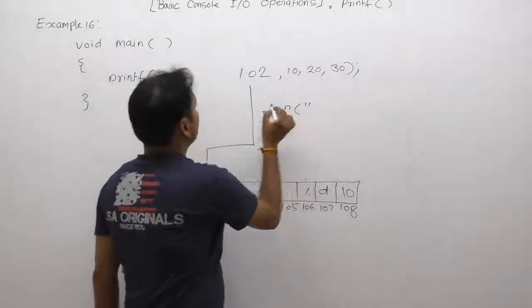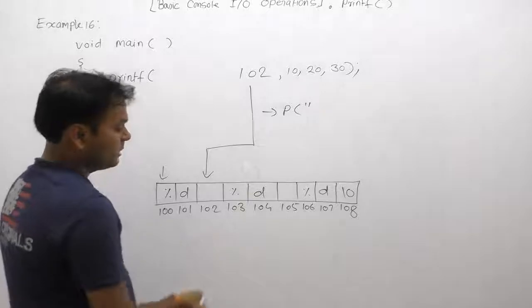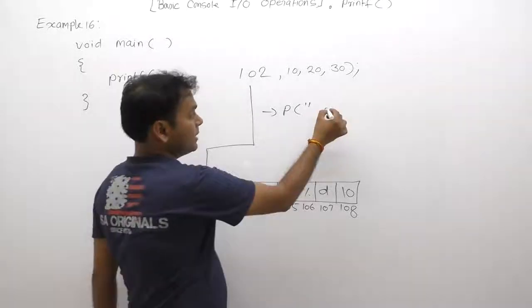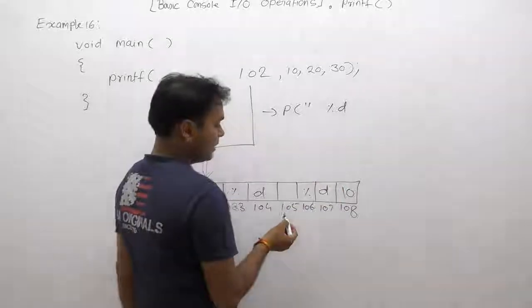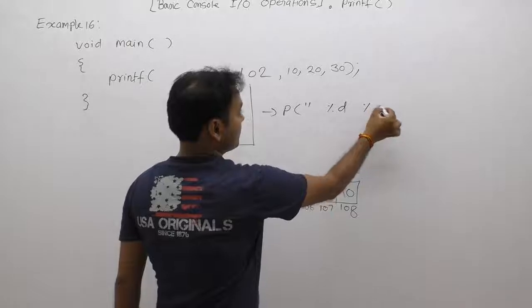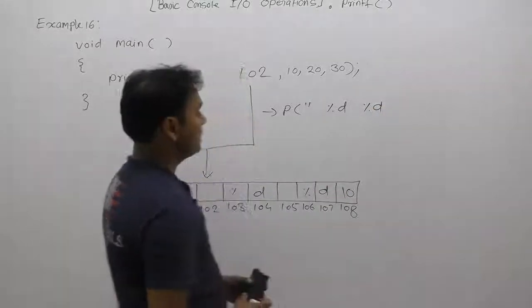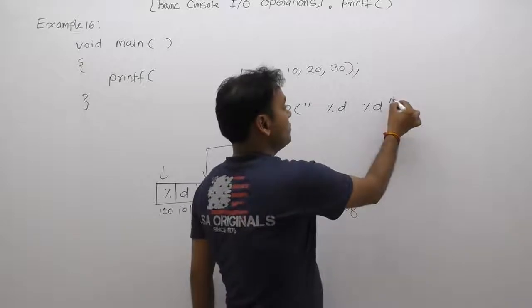Printf from 102 onwards: there's a space available, then percent d space, then percent d, then again a space, then again percent d. Physically, percent d is supplied three times, but logically it is available only two times.